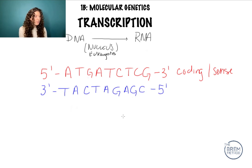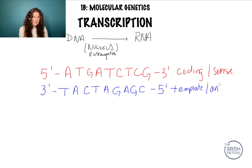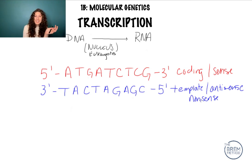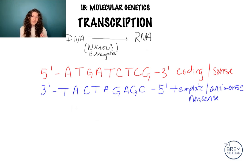The bottom strand — the one running three prime to five prime — is called our template strand, or antisense strand. Some professors even call it the nonsense strand; it all means the same thing. Just to confirm, this naming is only for transcription. If you're talking about replication, when we replicate both strands in a semi-conservative manner, they're not called coding or template strand — this is specifically for the process of transcription.